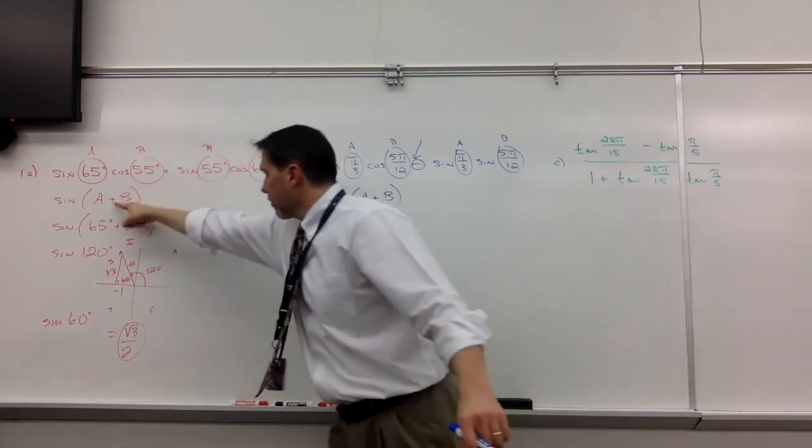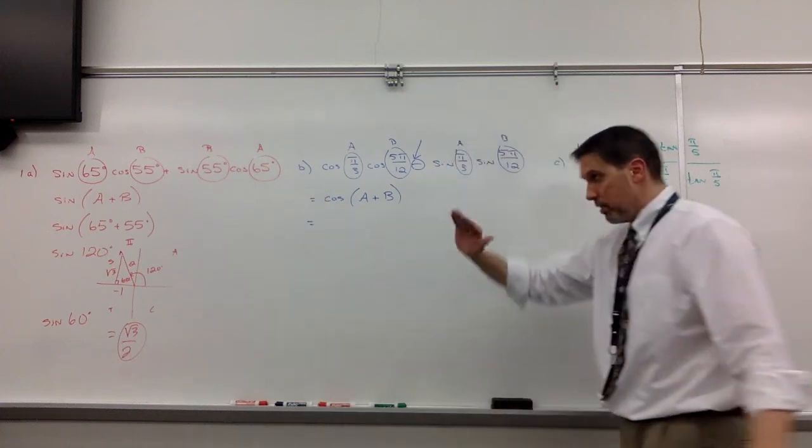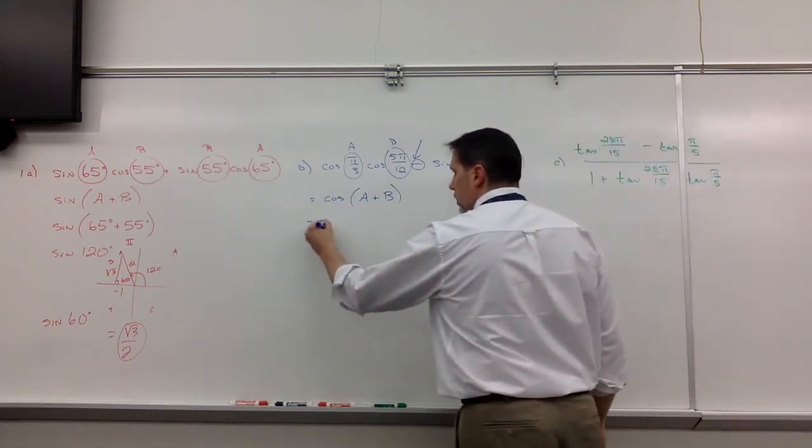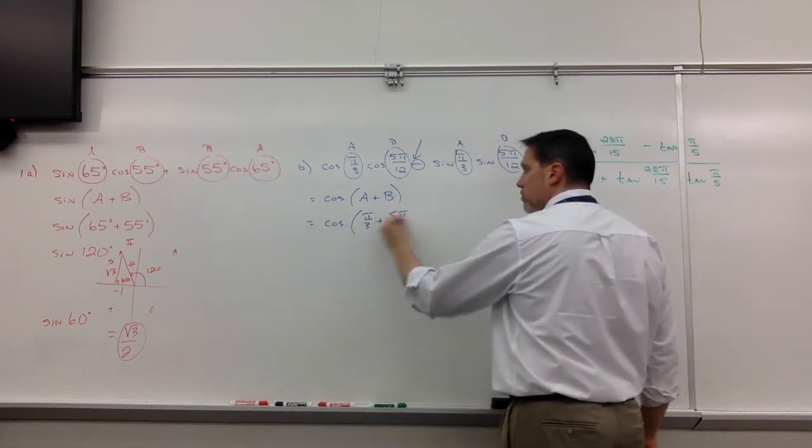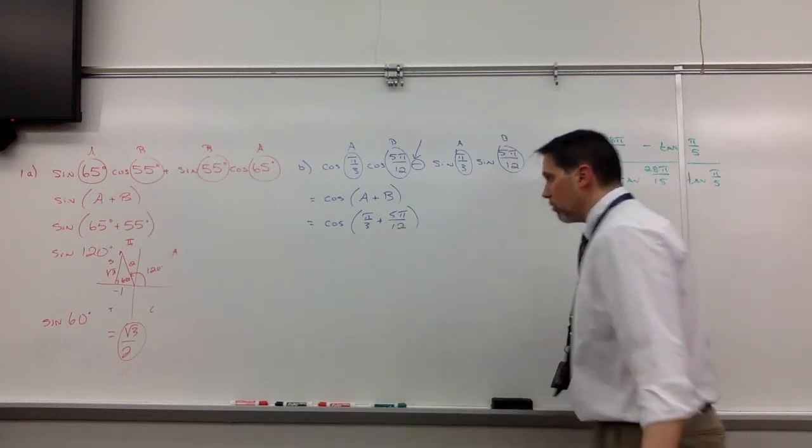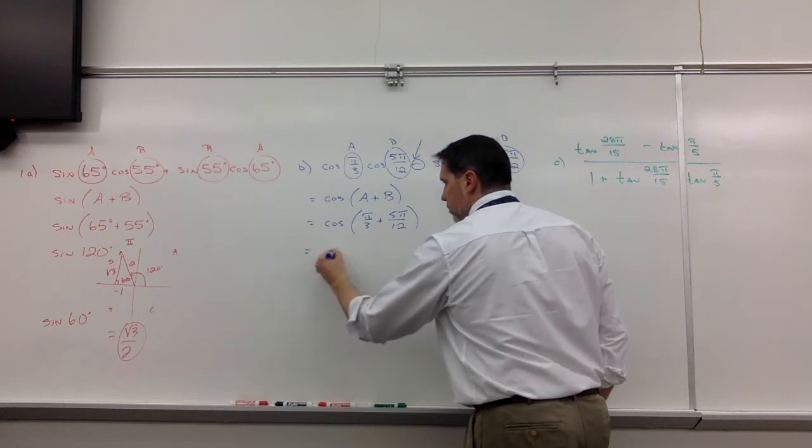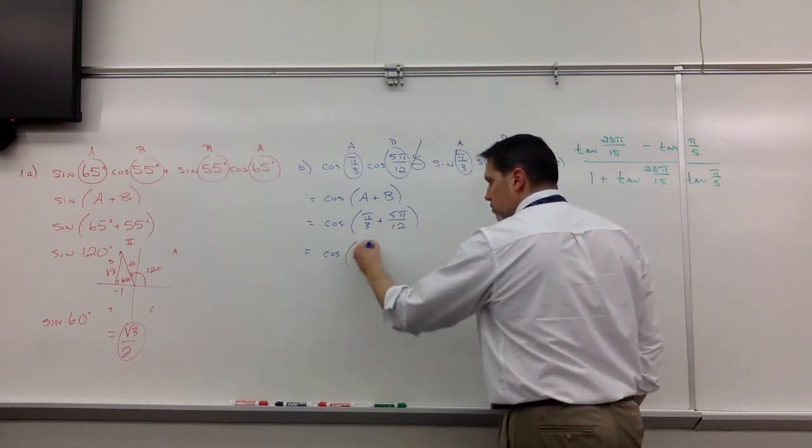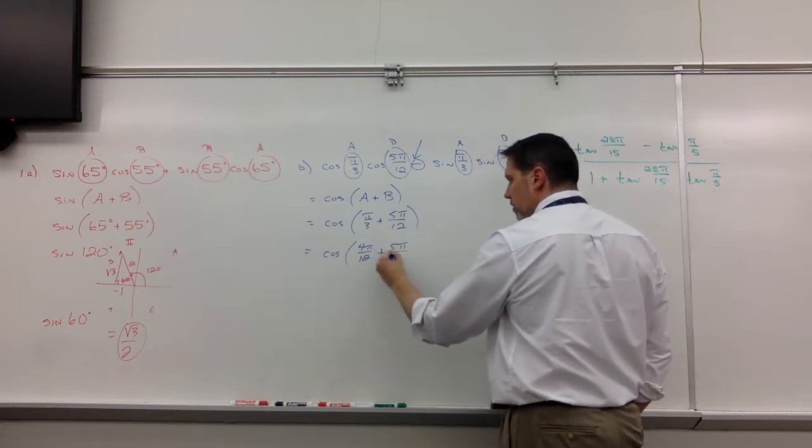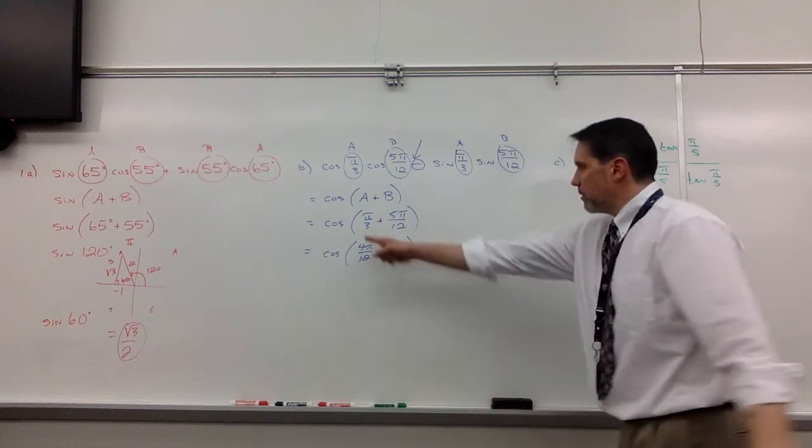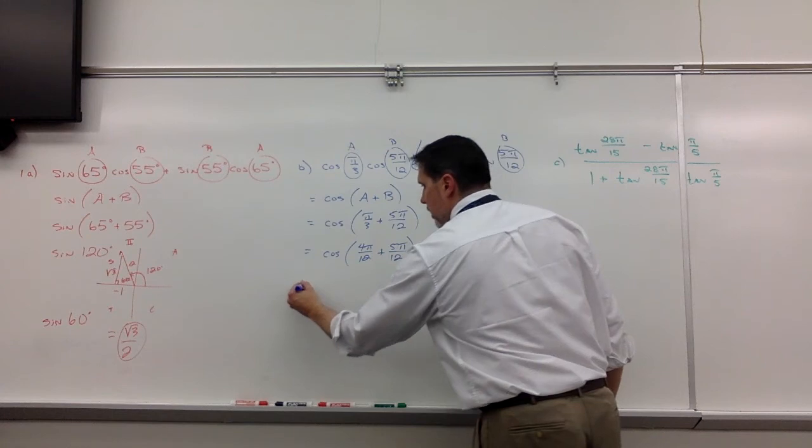Very important. That'd be a very bad mistake if you actually subtracted these. So we're looking at the cosine of A, which is π/3, plus 5π/12. That's playing the role of B. You get common denominators here. Cosine, we're looking at 4π/12. 4π/12 plus 5π/12. Getting common denominators, multiply top and bottom of this one by 4. That gives us a grand total of 9π/12.